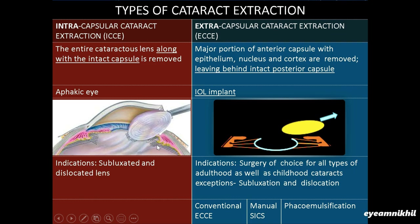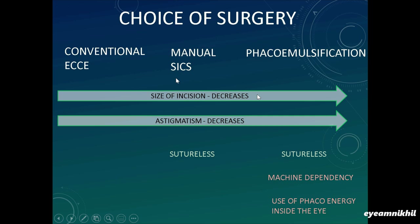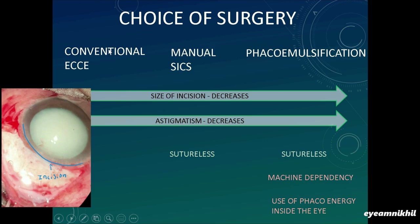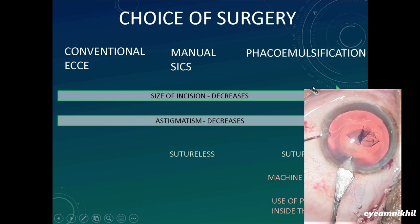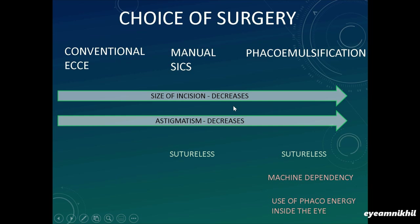Extracapsular cataract extraction surgeries include conventional ECCE, manual small incision cataract surgery, and phaco emulsification. Comparing amongst extracapsular extraction types, as we go from conventional ECCE towards phaco emulsification the size of incision decreases. In ECCE the incision is around 10 to 12 millimeters from 10 o'clock to 2 o'clock; in SICS the scleral incision is around 6.5 millimeters; in phaco emulsification it is usually 2.8 to 2.2 mm, and some surgeons have done it through a 1 mm incision. Post-op astigmatism decreases accordingly, and due to the large incision in ECCE sutures are required while SICS and phaco are sutureless.